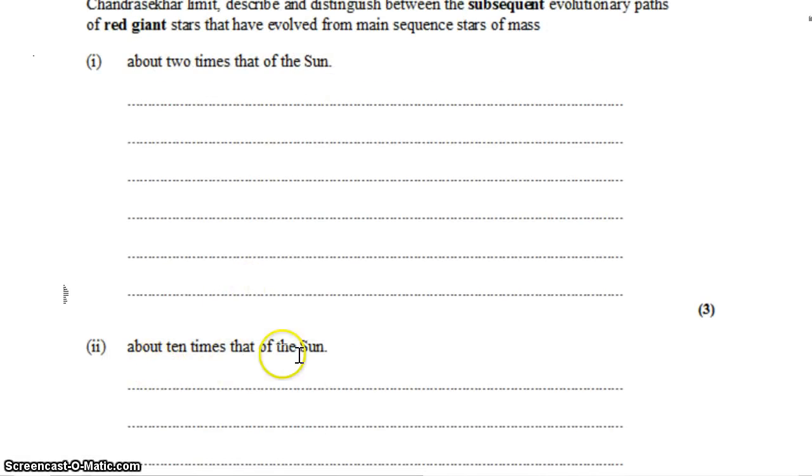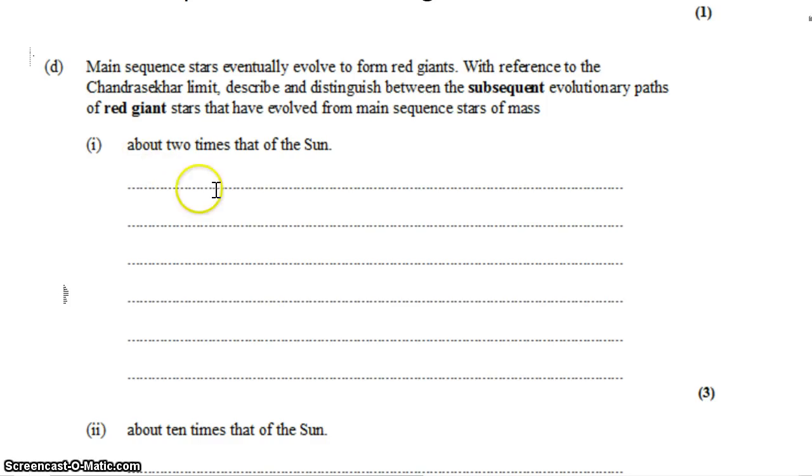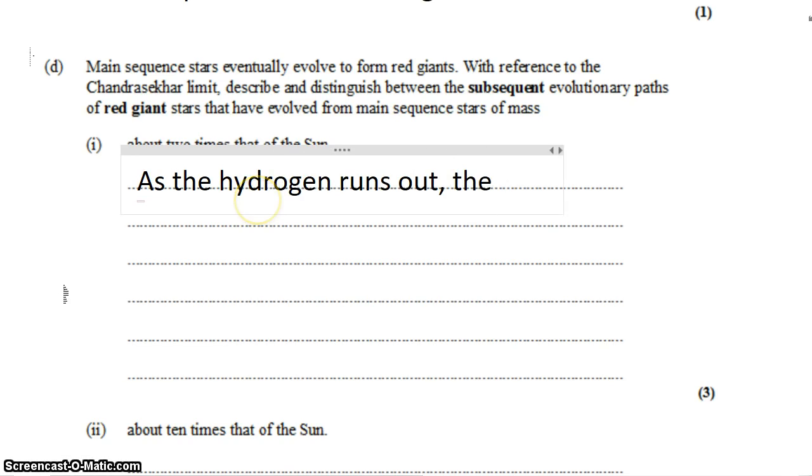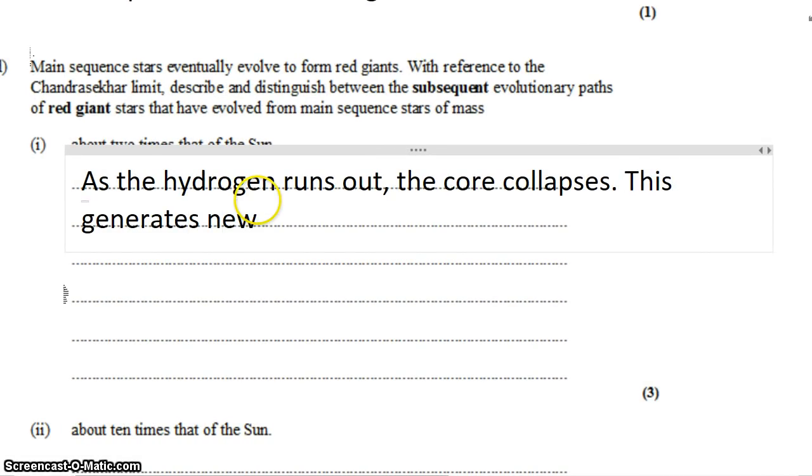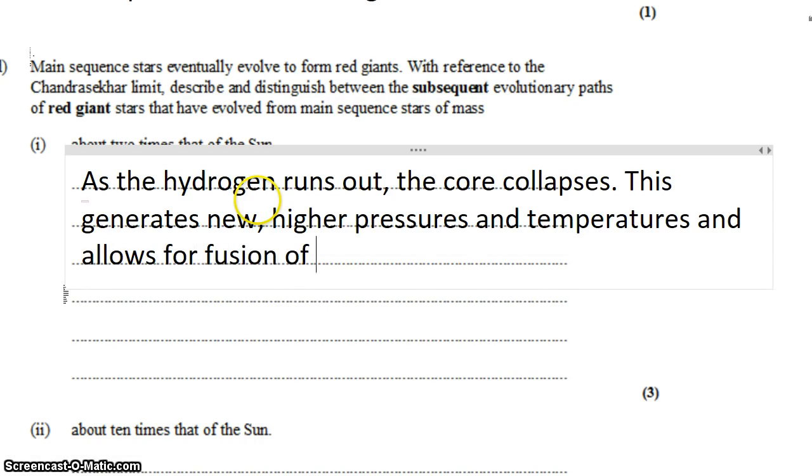times the mass of the sun and about ten times the mass of the sun. So what happens to large stars and very large stars? Well, the first thing that happens is as the hydrogen runs out, the core collapses. This generates new, higher pressures and temperatures and allows for fusion of helium.